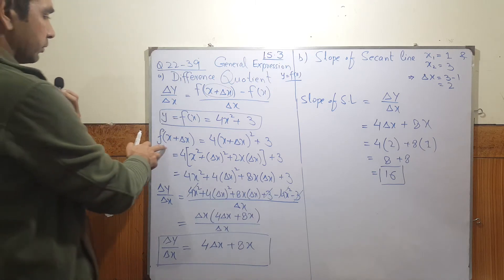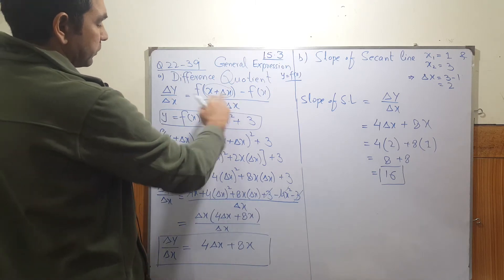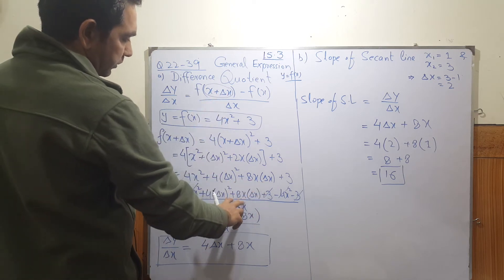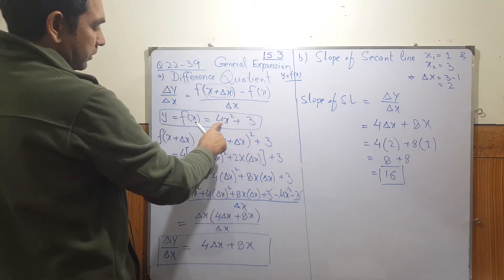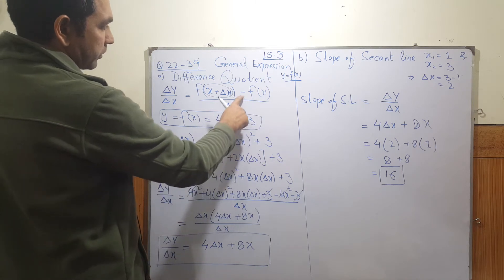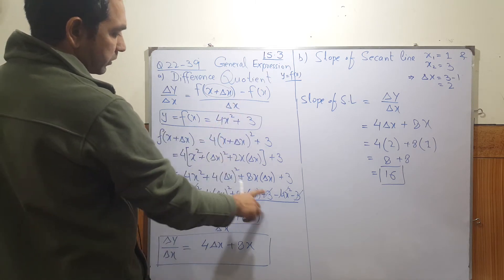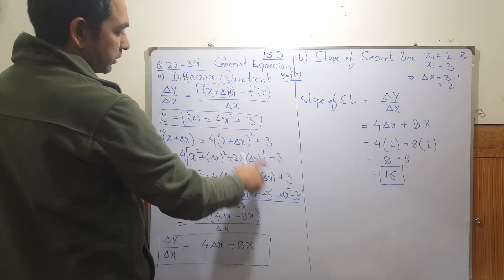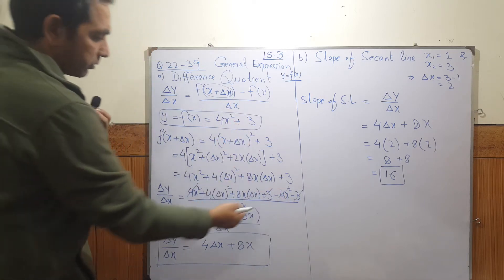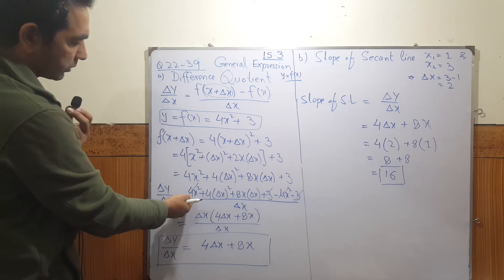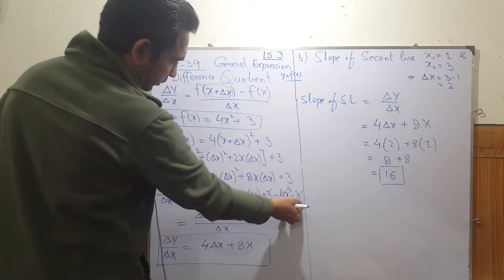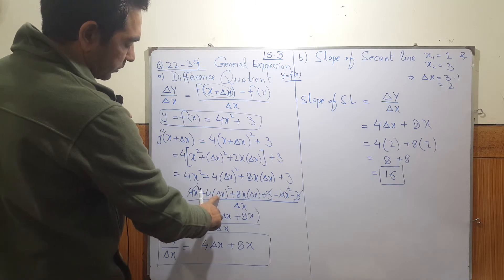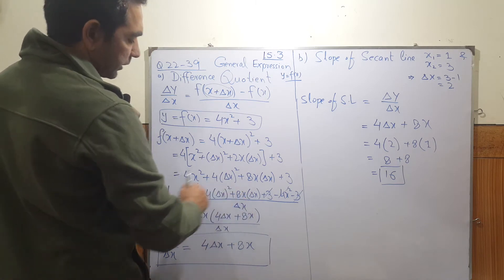Now substitute this value and the function value into the difference quotient formula. We replace all these values and then subtract (4x² + 3). Minus multiplied to 4x² gives minus 4x², and minus multiplied to plus 3 gives minus 3. So 4x² terms cancel each other and the 3 terms cancel each other.